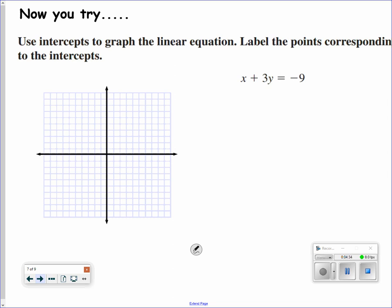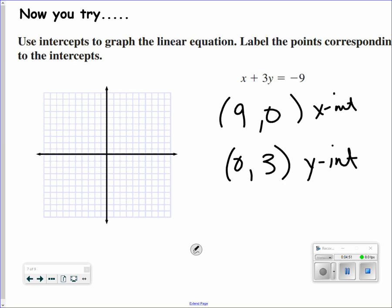You try this one. Hit pause and see if you can get this one by yourself. All right, welcome back. So now, if I put 0 in for y, I would get 9 for my x-intercept. If I put 0 in for x, I would get 3 for y for my y-intercept. Graphing those two points, (0, 3), (9, 0). And yes, it does matter. The x-coordinate is always first and the y-coordinate is always second. So (9, 0), and (0, 3).